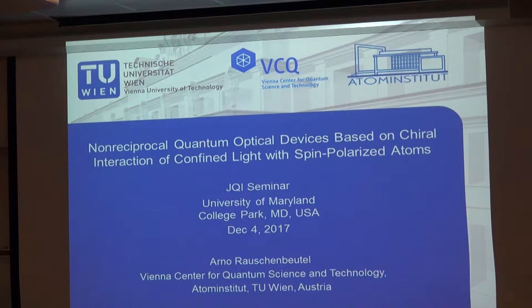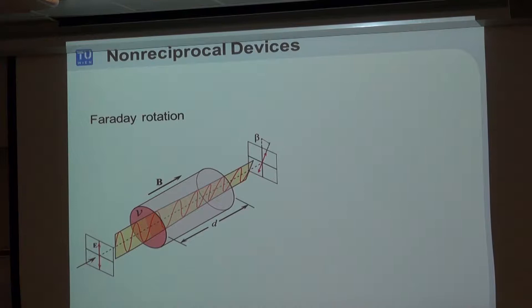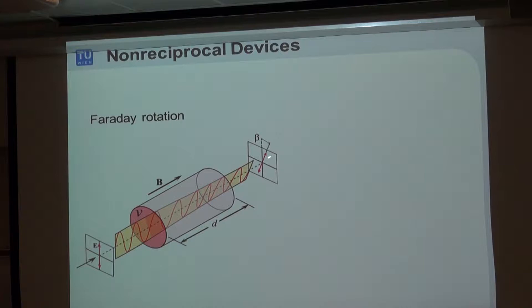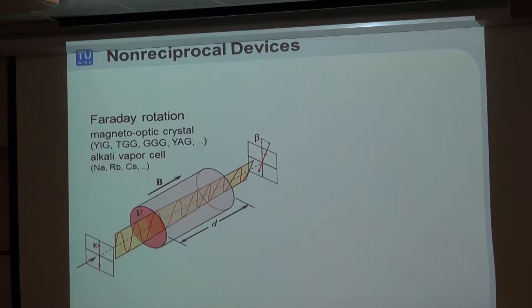Let me first say a few words about what non-reciprocal means in the context of optics. A non-reciprocal element is an element which treats light differently depending on whether it propagates from left to right or right to left. That can be the phase or the amplitude of transmission that is different for the two propagation directions. The prime example of such a non-reciprocal element is a Faraday rotator — a Faraday rotator actually rotates the plane of linear polarization when light propagates through a medium, which is a magneto-optic crystal, but it can also be, for example, alkali vapor, as demonstrated by Charles Adams recently.